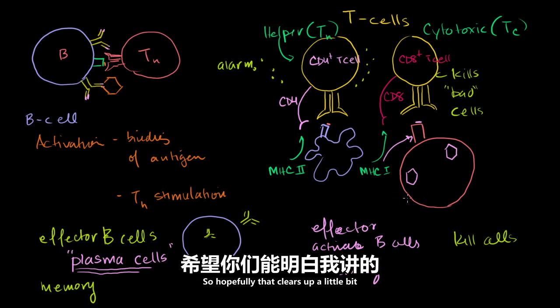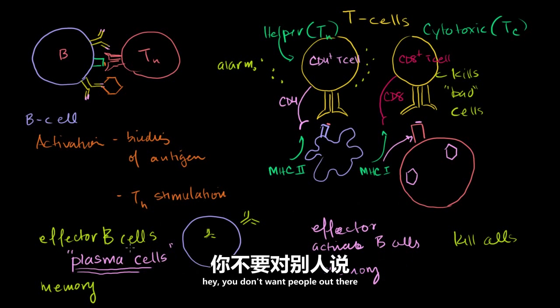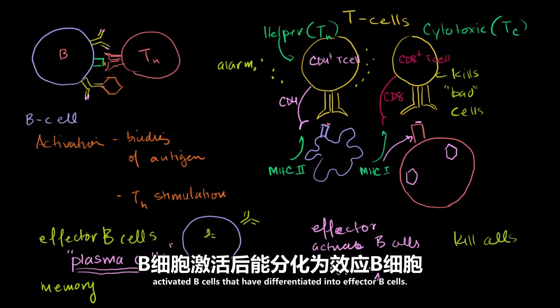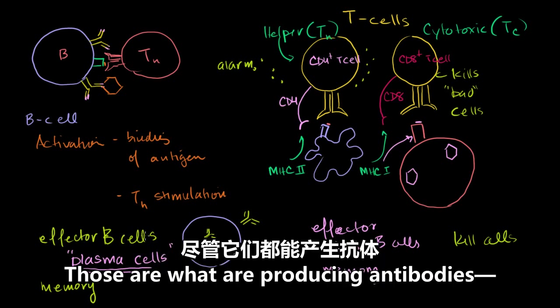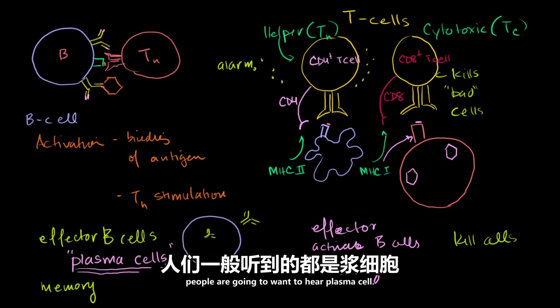So hopefully that clears up a little bit. And I introduced a little bit more terminology. But I really want to stress my wife's point, because she said, hey, you don't want people out there saying B cells produce antibodies, even though it is effector B cells, once activated B cells that are differentiated into effector B cells. Those are what are producing antibodies, because when they go to medical school, people are going to want to hear plasma cell.